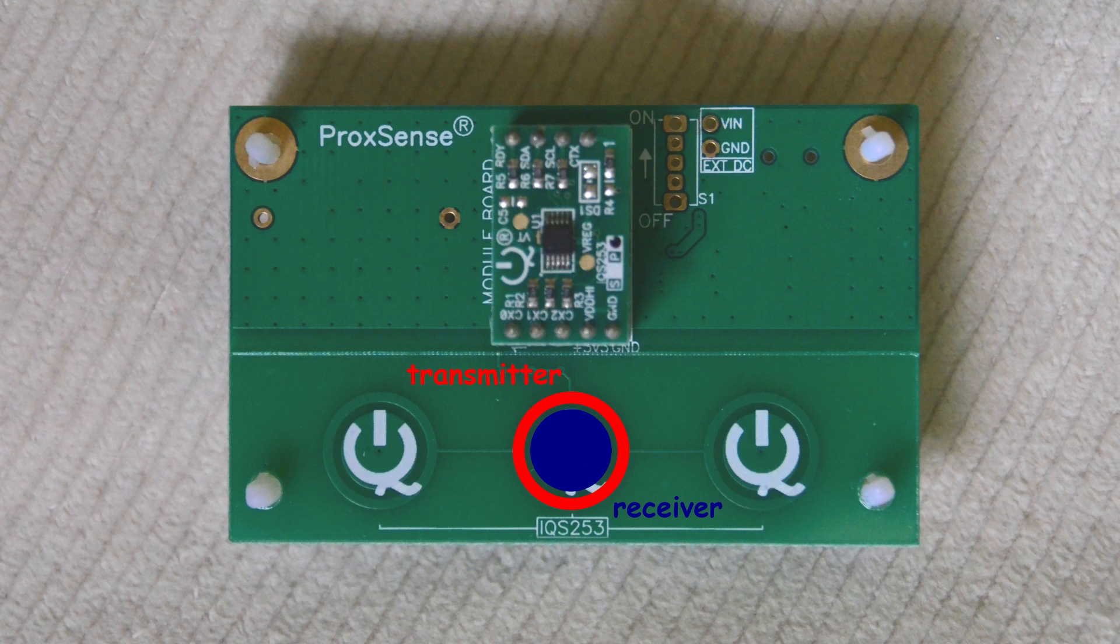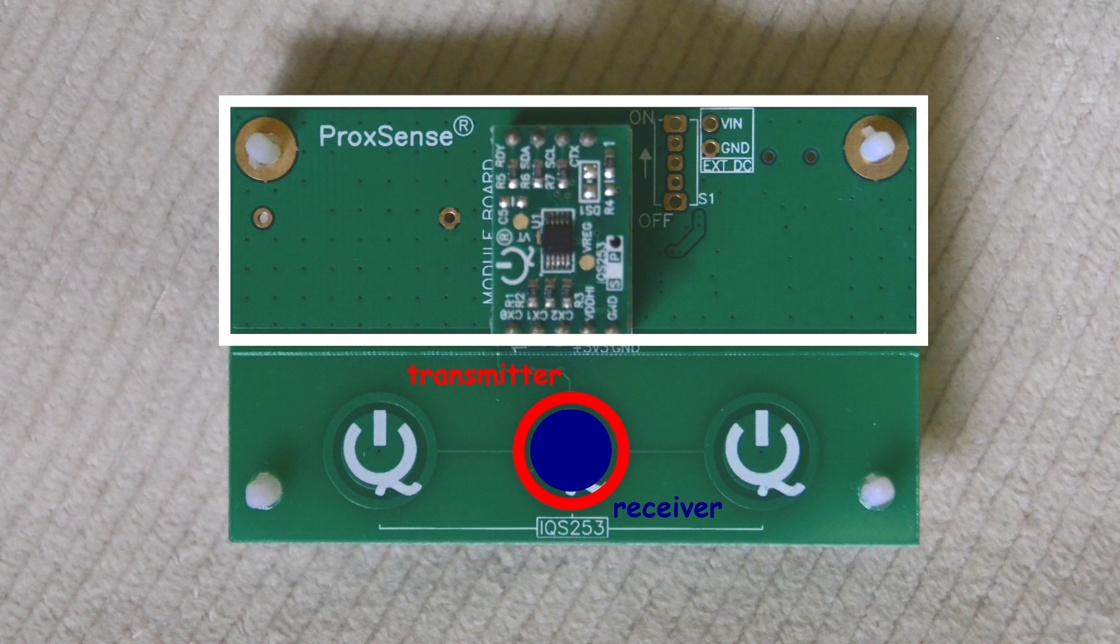So on the one hand, a bigger receiver can pick up more signal, but on the other hand, it can also bring up the turning point. As a result, it is the ratio of the receiver area to the ground plane area that matters the most.